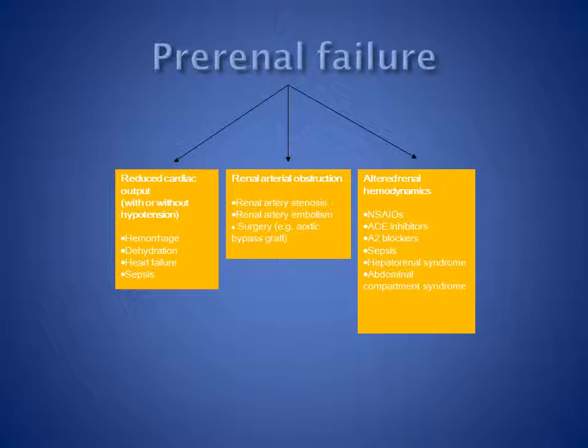Let's look at each mechanism of injury in a little bit more detail, starting with pre-renal failure. Pre-renal failure is caused by reduced renal perfusion. This can be due to reduced cardiac output, which may occur with or without a reduction of blood pressure — commonly due to hemorrhage, dehydration, heart failure, or sepsis.